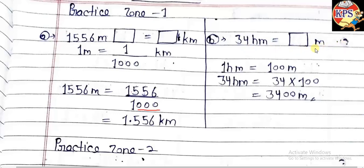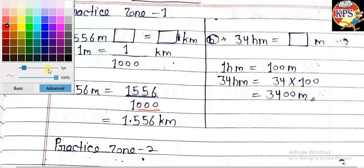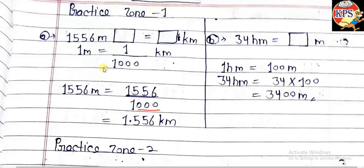In the next question, you can see 34 hectometers — you have to convert it into meters. So 1 hectometer equals 100 meters. Then 34 hectometers: we multiply 34 by 100, which gives 3400 meters. That is the answer. I hope you don't have any problem with these questions since I have already explained the method.